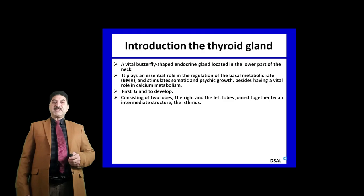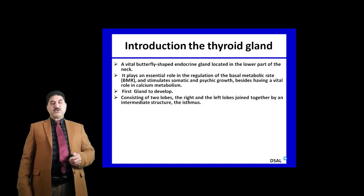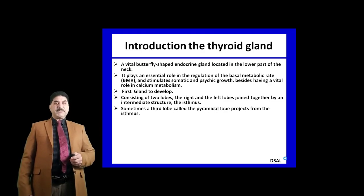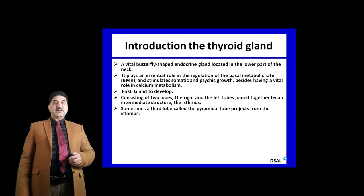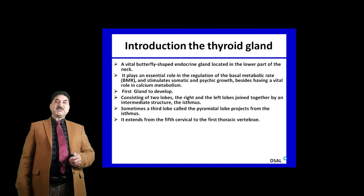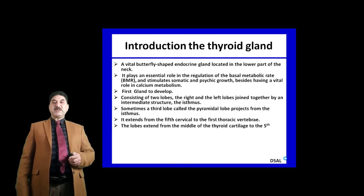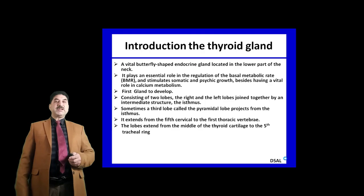Thyroid is the first endocrine gland to develop in the body. It consists of two lobes — right and left — which are connected by an isthmus. Sometimes a third lobe is present called the pyramidal lobe, which originates from the isthmus. It extends from the fifth cervical to the first thoracic vertebra, with lobes extending from the middle of the thyroid cartilage to the fifth tracheal ring.